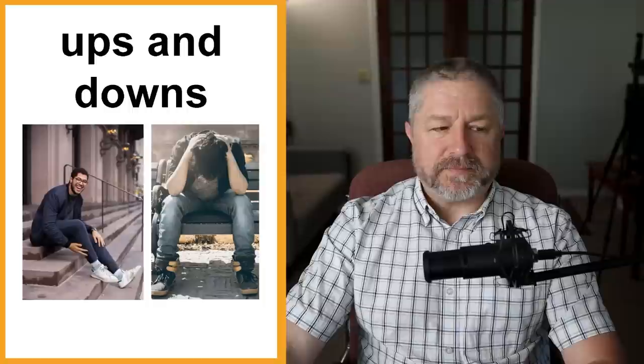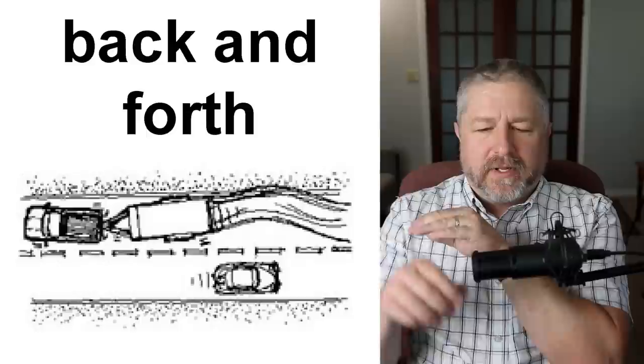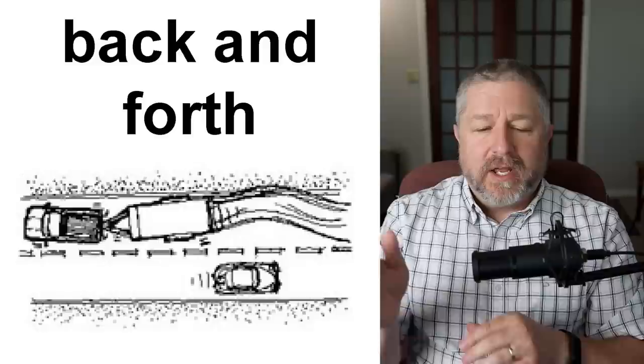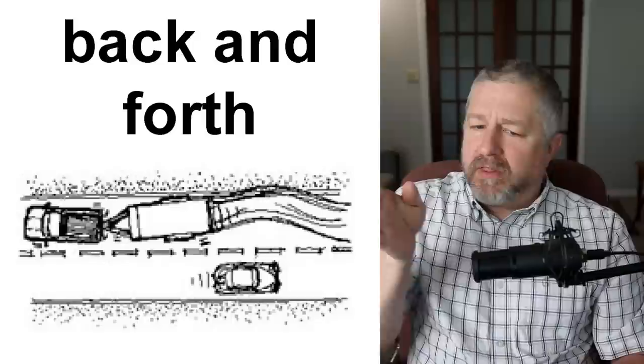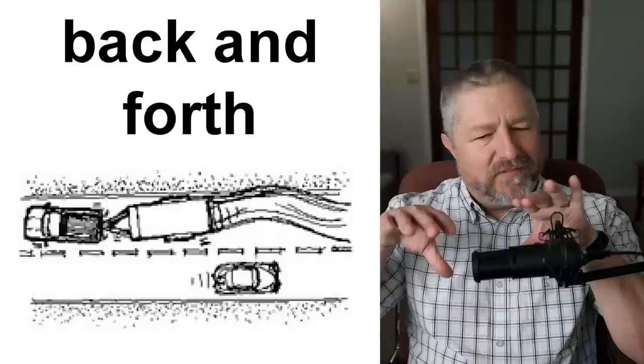Back and forth. I could not find a good picture for this one. But when something goes back and forth, it goes like this. I found a picture of a person pulling a trailer. Sometimes when someone pulls a trailer, the trailer starts to go back and forth behind the car or behind the truck. The phrase back and forth refers to anything that's moving like from one side to the other and back again. You could say like a flag in the wind goes back and forth. It just kind of flaps in the wind. This is a top view of a person pulling a trailer that's going back and forth.